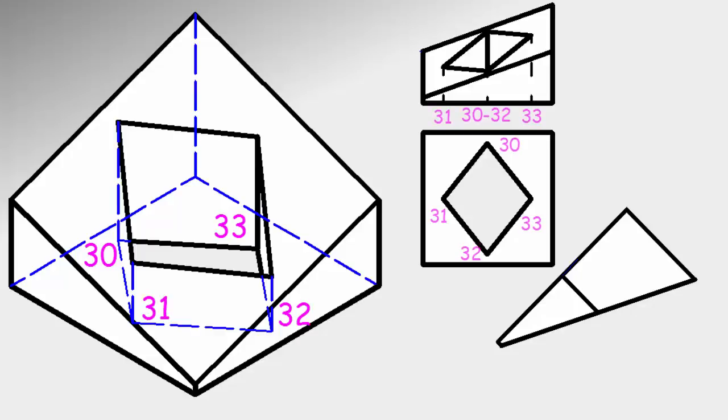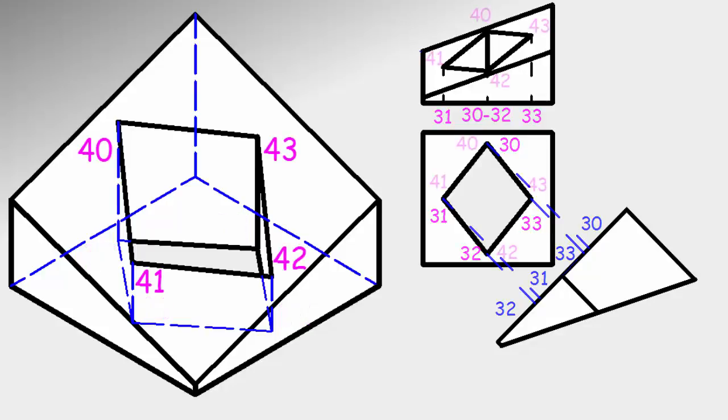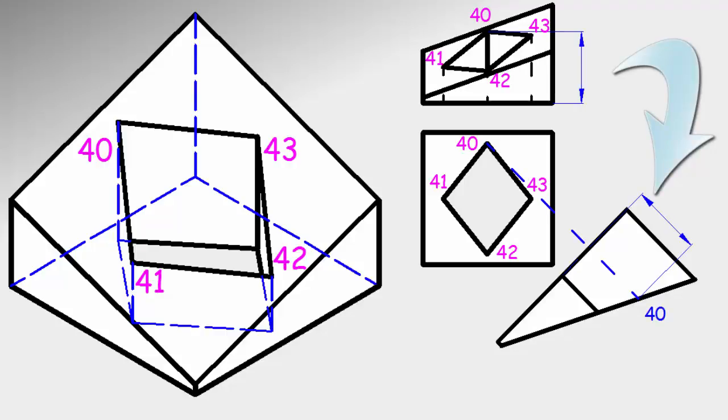For the hole we follow the same procedure. From the bottom we project vertices 30, 31, 32, and 33 at ground level to the new view. For the top of the hole: 40, 41, 42, and 43. We can take the dimensions from the elevation or extend perpendiculars to touch the projecting face.